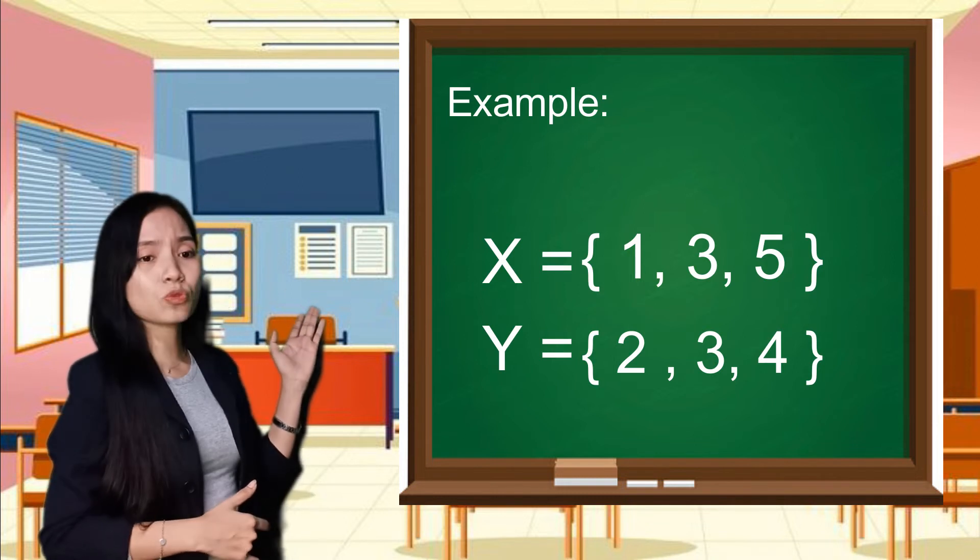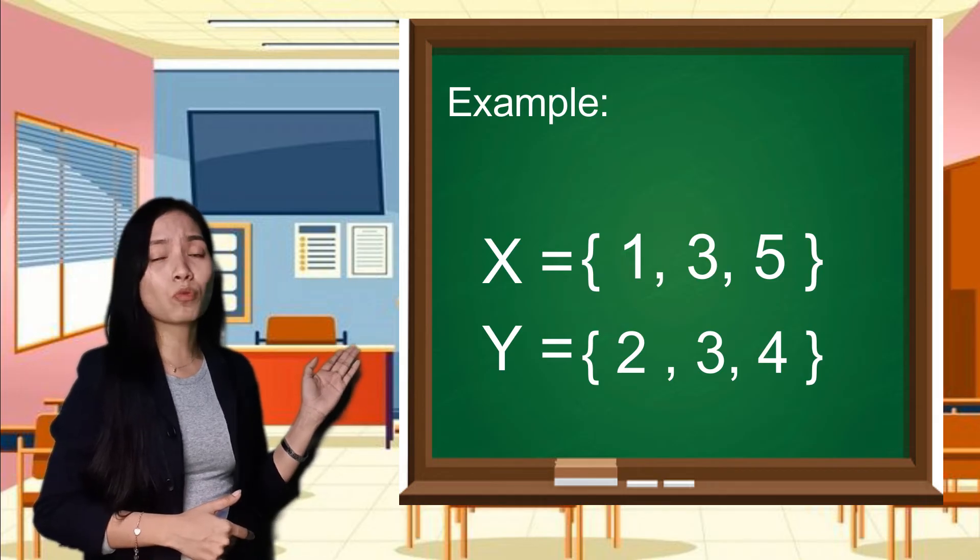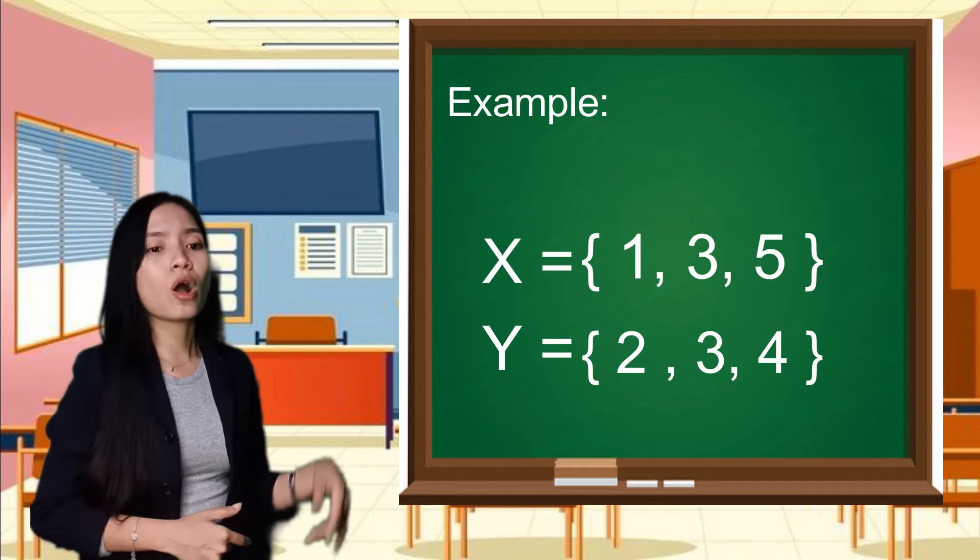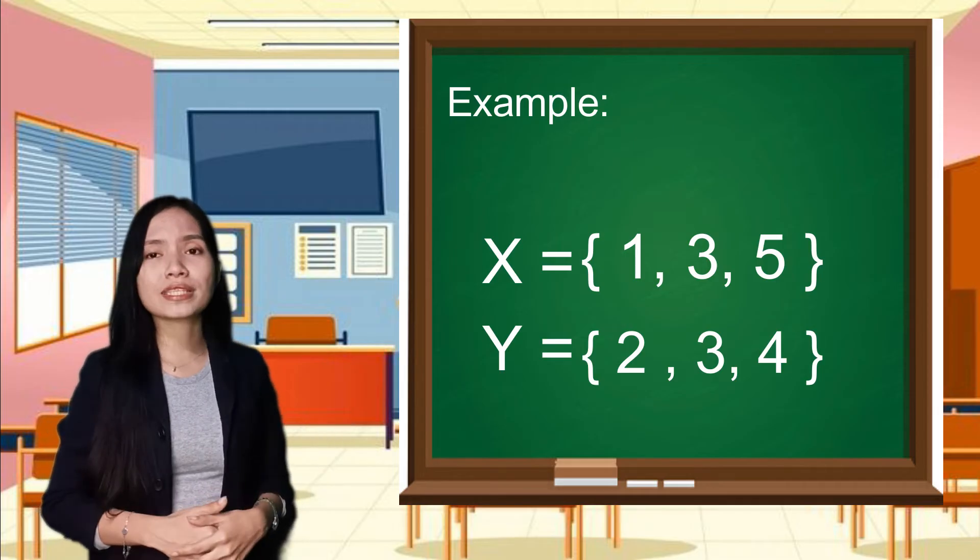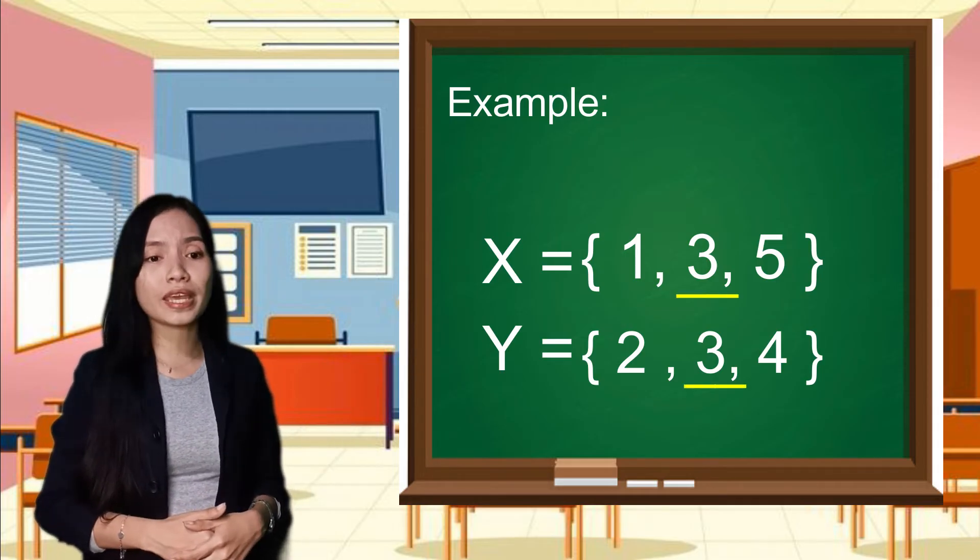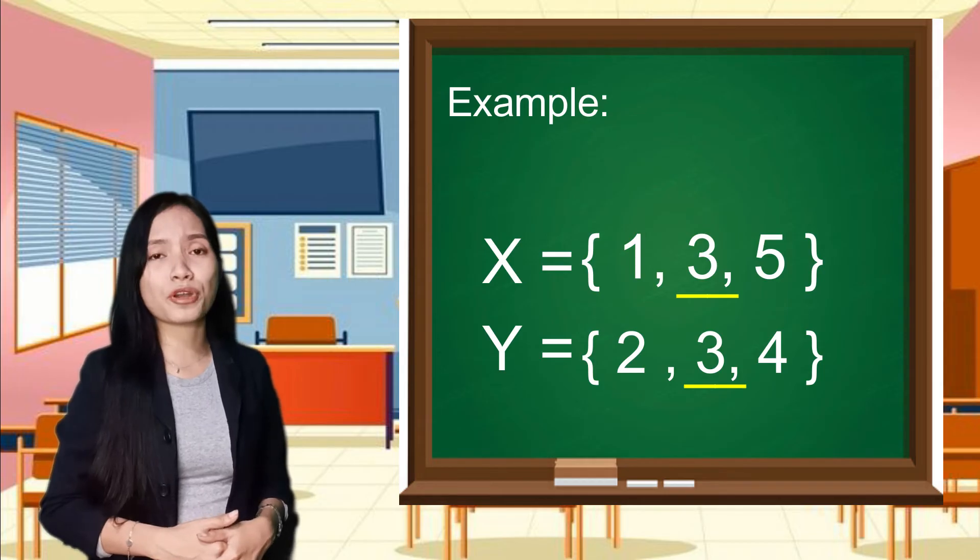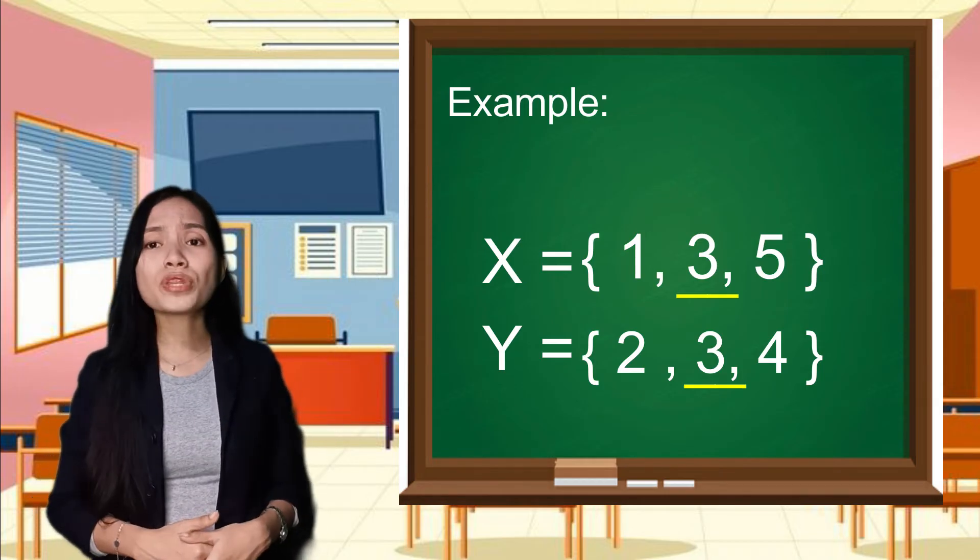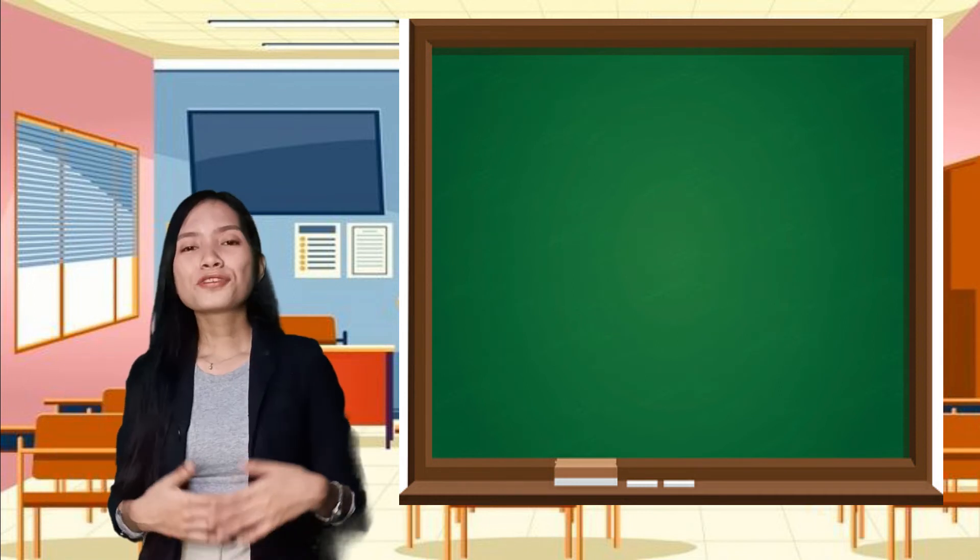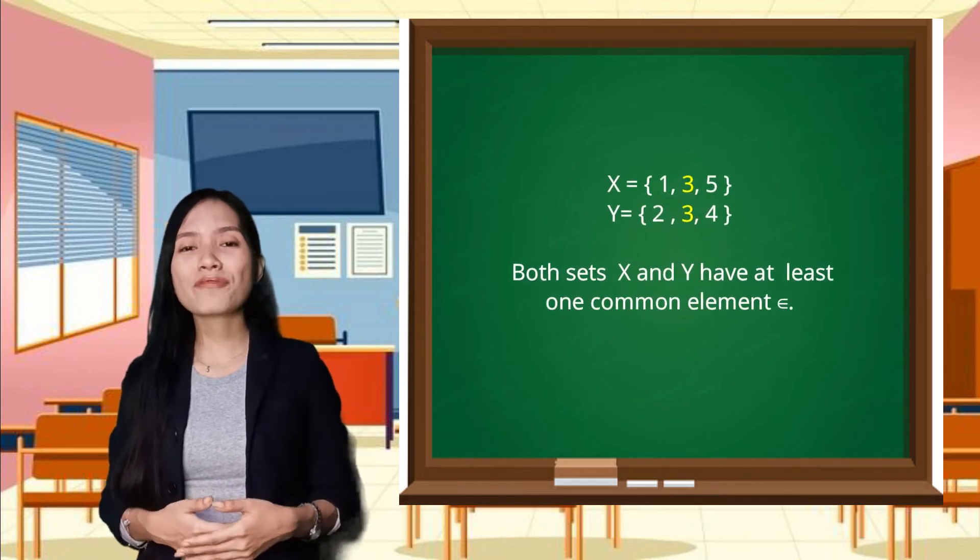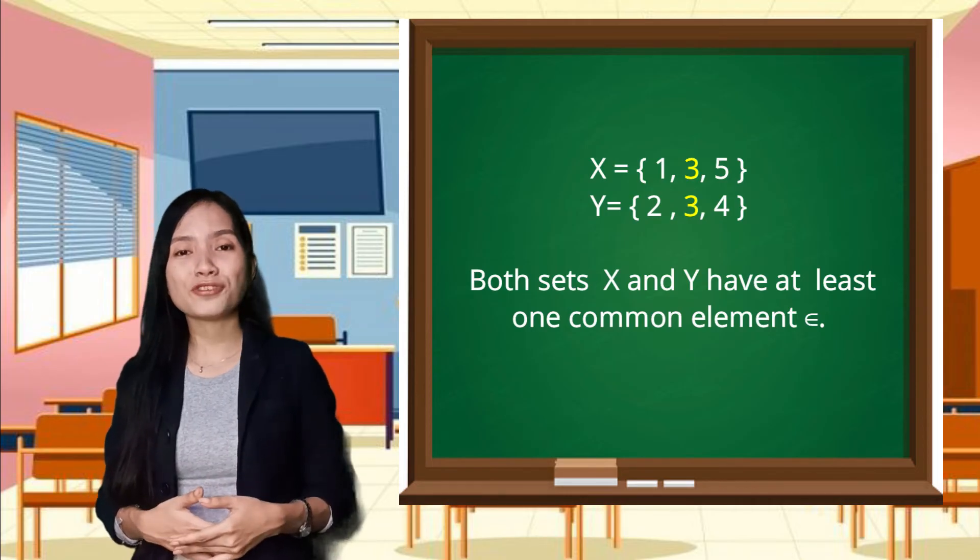So now in set X, we have number one. Is there number one in the set Y? There is no number one. Well, number three or element three. There is element number three in the set Y. What about number five? There is no element five or number five in the set Y. So now we could conclude that this is an example of a joint set. Both sets X and Y have at least one common element. So they are an example of a joint set.